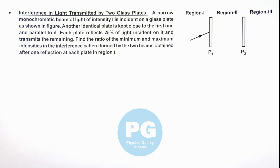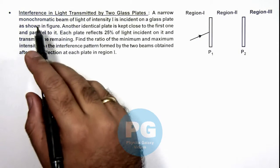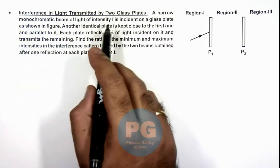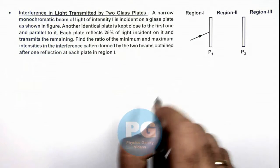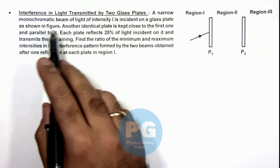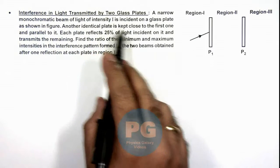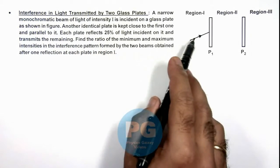In this illustration, we'll discuss interference in light transmitted by two glass plates. Here we are given that a narrow monochromatic beam of light of intensity I is incident on a glass plate as shown in figure.